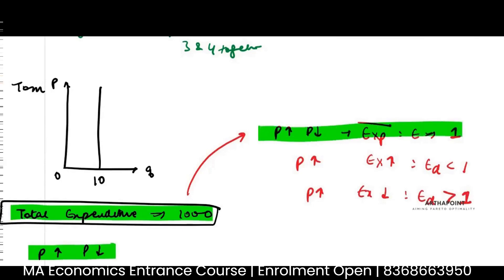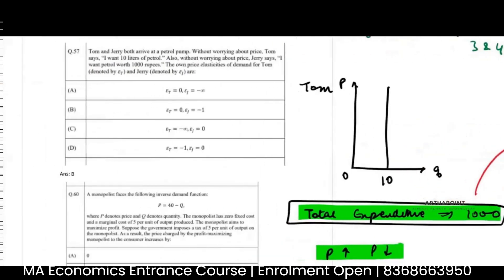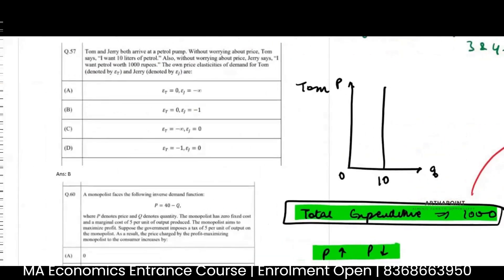So my elasticity will be 1. So for the other person, whoever that person is Jerry, elasticity is 1, which means automatically my answer is B.